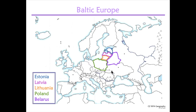Baltic Europe makes a sandwich by the sea. Estonia, Latvia, Lithuania, Belarus to the east you see. Poland is a snowball at the bottom of the sea. These are the five northern countries by the great big Baltic Sea.